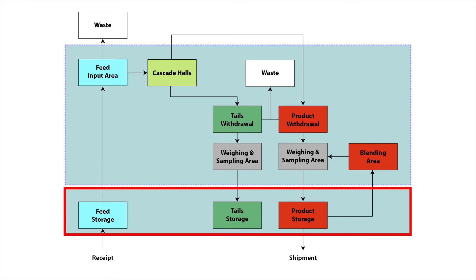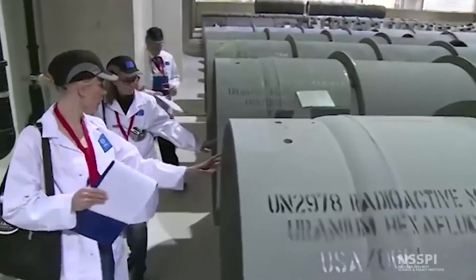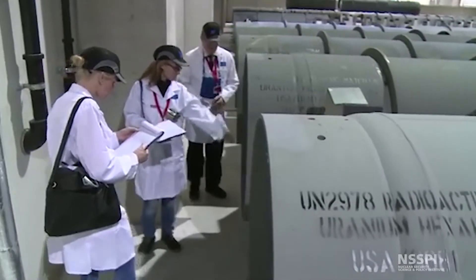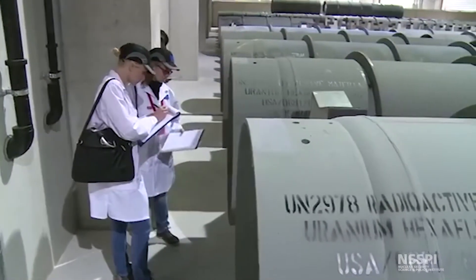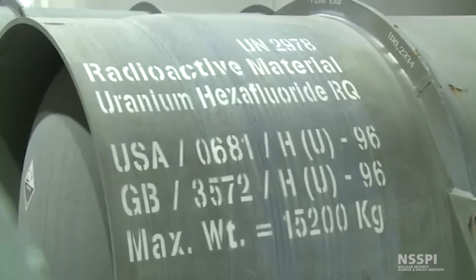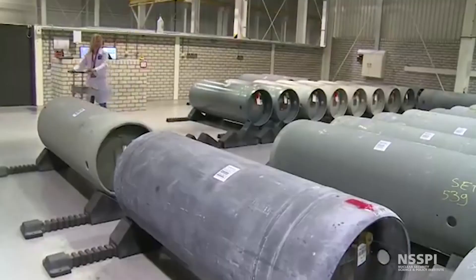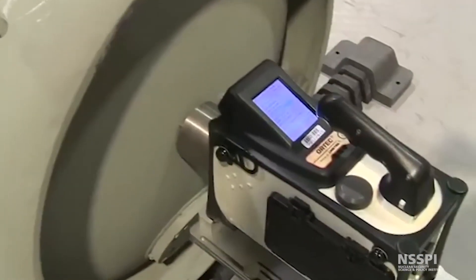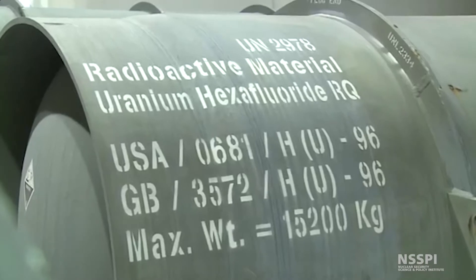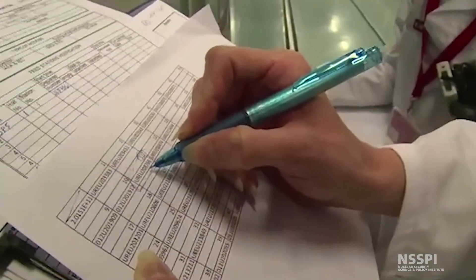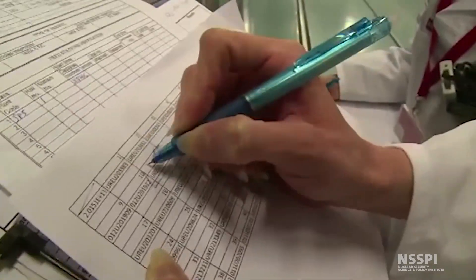In the storage area, item accounting would be performed based on the number of UF6 cylinders counted and the identification numbers verified for feed, product, and tails storage. While the weight and enrichment of randomly selected containers will be verified using bulk accounting measurements, the main accountancy method used in these areas is a physical count, including a verification of the identity and integrity of the containers.